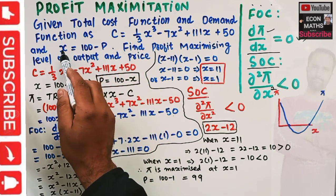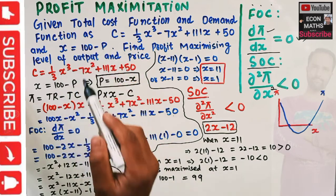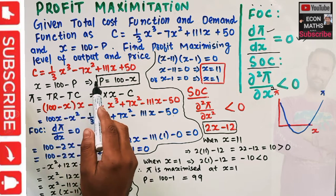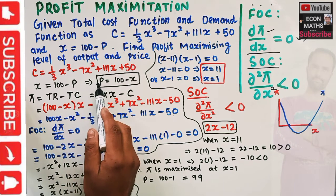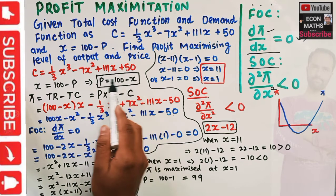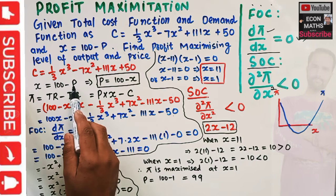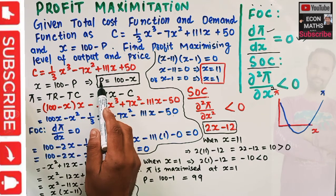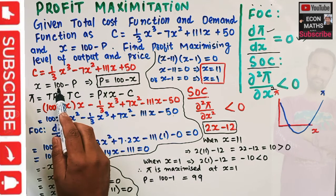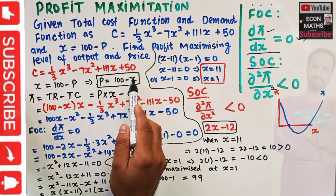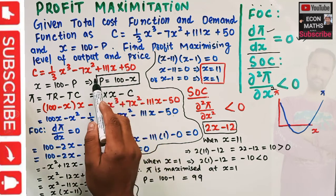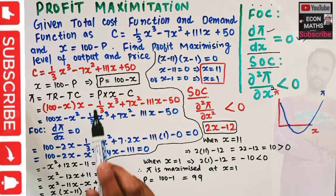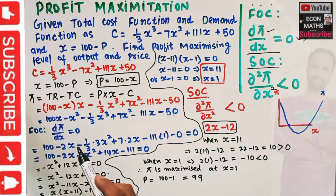We are given the cost function and the demand function. First, we need to solve the demand function for P — that means we need to find the inverse demand function. Transposing P and X, we get P = 100 - X. This is our inverse demand function.